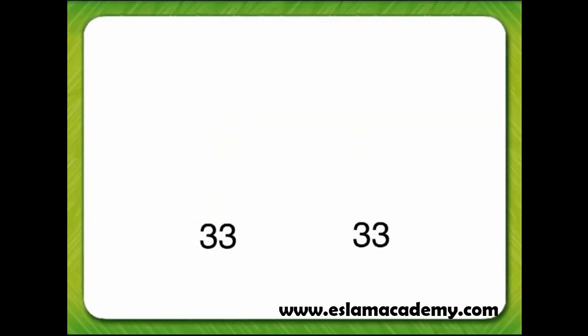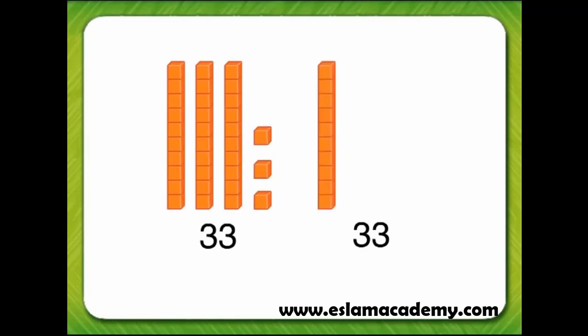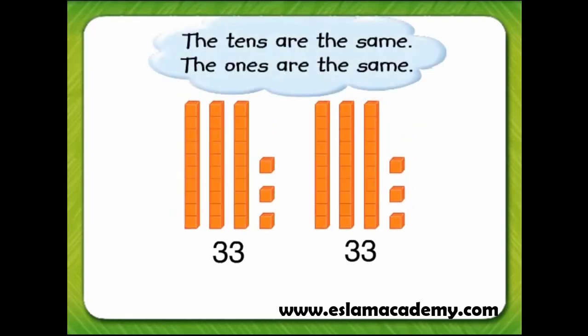Our final comparison is 33 and 33. 33 is three tens and three ones. As we said with the first number, 33 is three tens and three ones. The tens are the same. The ones are the same. 33 is equal to 33.